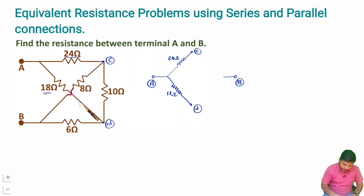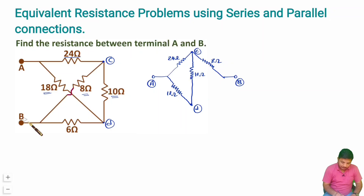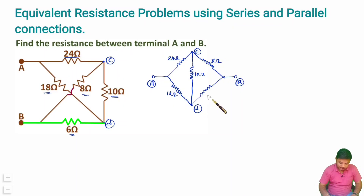Between B and C we have an 8-ohm resistor. Between C and D we have a 10-ohm resistor, so let me connect 10-ohm between C and D. Between B and D we have a 6-ohm resistor. So now I have connected all the resistors.